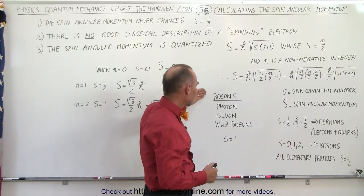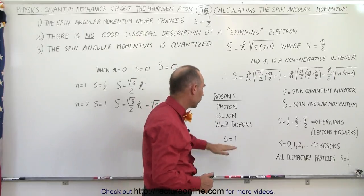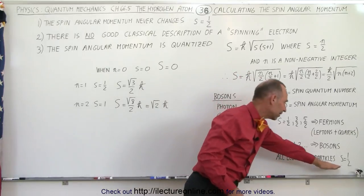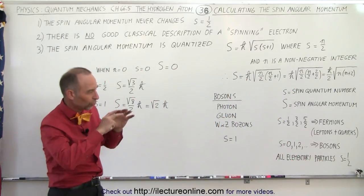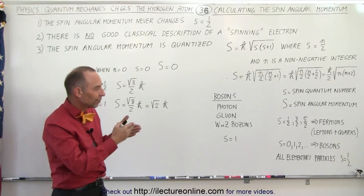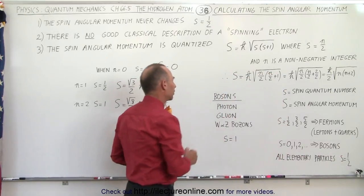And again, bosons consist of either photons, gluons, W or Z bosons, and so forth. So we have s equals 1 as typical for bosons, s equals 1 half as typical for all elementary particles. So we just kind of look at the whole picture and think there could be other values there. But it turns out that most particles we find for elementary particles, we have s equals 1 half or s equals 1 for bosons.